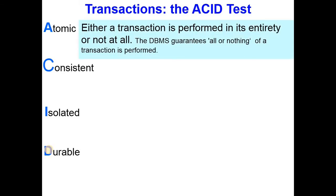First of all, the transaction is atomic. It means you can't break up the transaction into several pieces. If several operations are bundled together in a transaction, either we'll do all of it, or if something goes wrong, we'll do none of it.